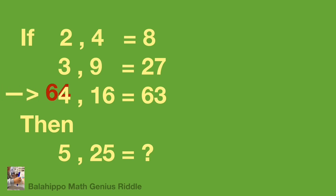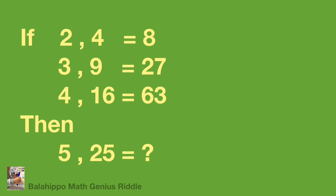It makes sense, right? However, it's not a typo. It gives us input information and it gives the result value. Let's try to find the rule between them.